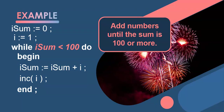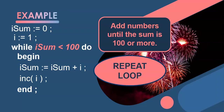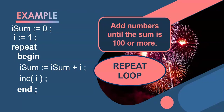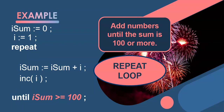Our condition is: while iSum is less than 100, keep doing that. For a repeat loop, it's the exact same code — we just take out the while loop parts, put in a 'repeat' and 'until' with the opposite condition: iSum >= 100 instead of iSum < 100. And we don't need the 'begin' and 'end' for the repeat loop. That's how you convert a while loop to a repeat loop.